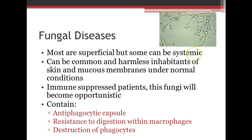Next is fungal diseases. Most are superficial, found on the outside of the body or skin, but some can be systemic. They can be common and harmless inhabitants of skin and mucous membranes under normal conditions — many of us have a balance of fungus and bacteria, especially in our intestines — but in immune-suppressed patients such as chemotherapy patients, the elderly, or those with HIV or AIDS, they become opportunistic. Some fungal diseases have an antiphagocytic capsule, are resistant to digestion within macrophages, and can cause the destruction of phagocytes.